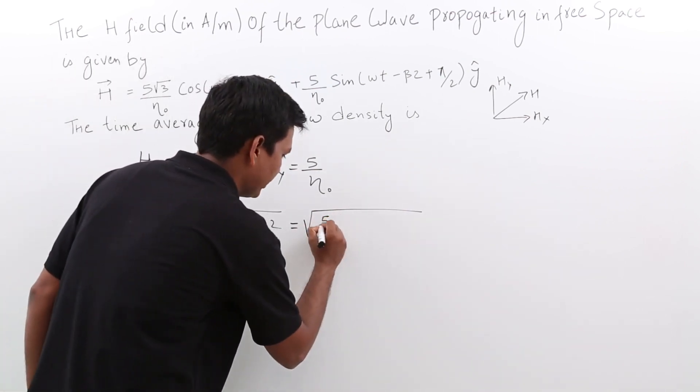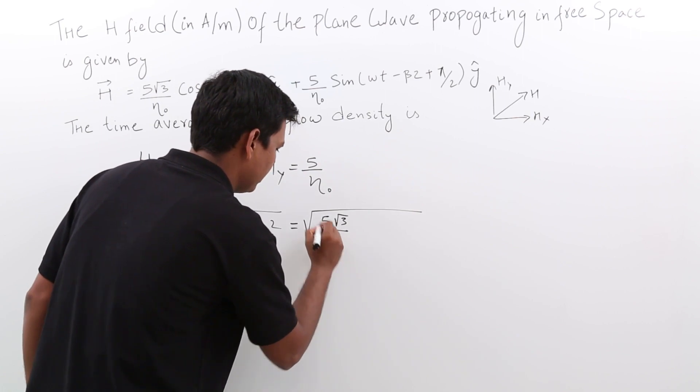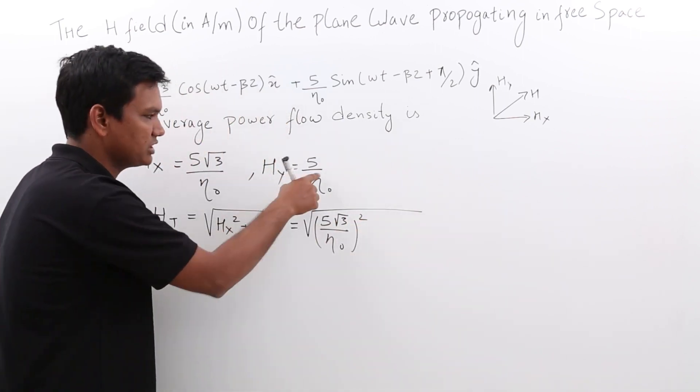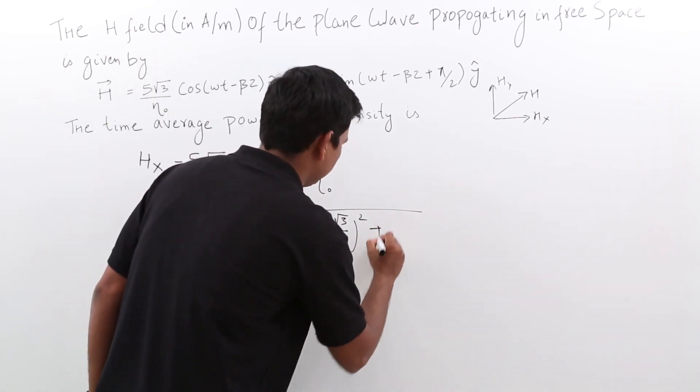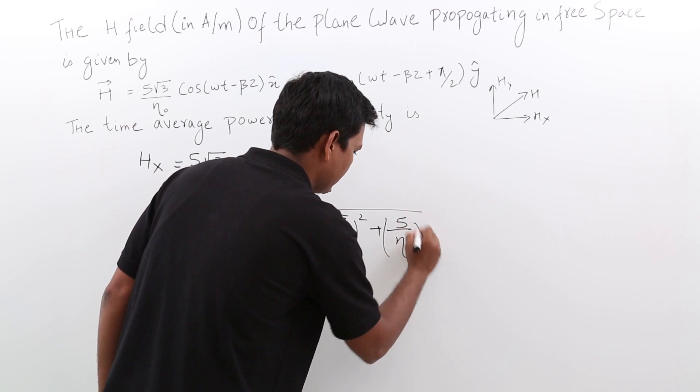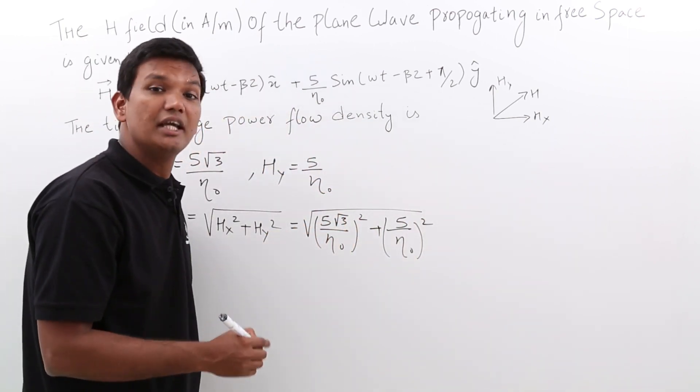So it would be 5 root 3 by n naught the whole square. What will be H y? H y is 5 by n naught. So it would be 5 by n naught. Remember, n naught is the intrinsic impedance in free space.